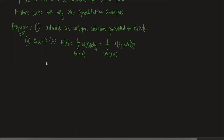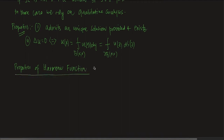Once you understand harmonic functions, dealing with the Poisson equation is much easier. So we will concentrate on harmonic functions for now. We are going to prove some properties of harmonic functions. Recall that harmonic functions are functions for which Laplacian of u equals zero. The first very important property is called the strong maximum principle.